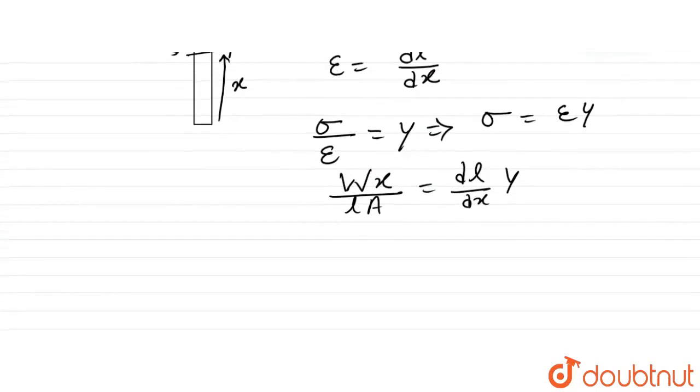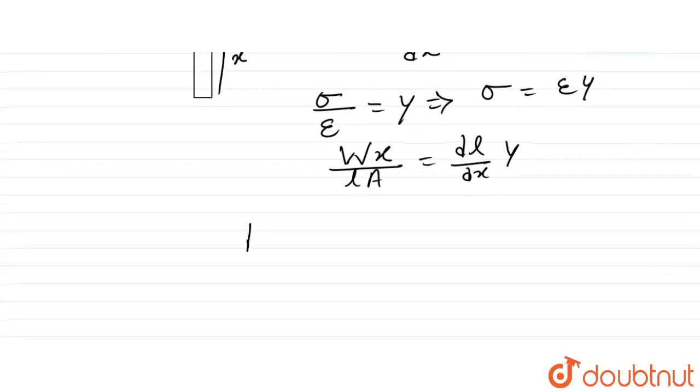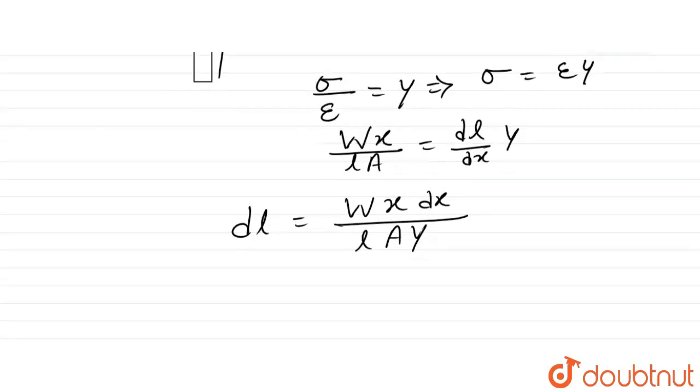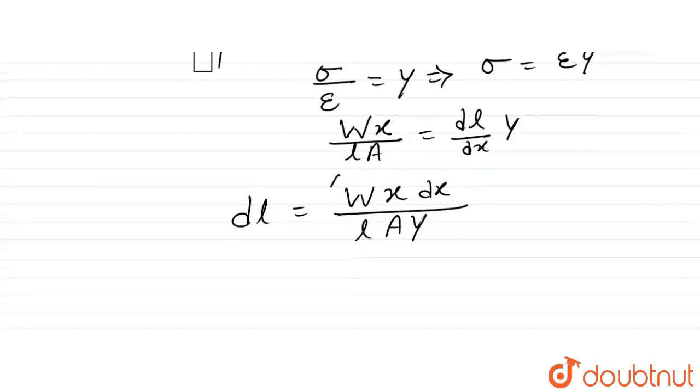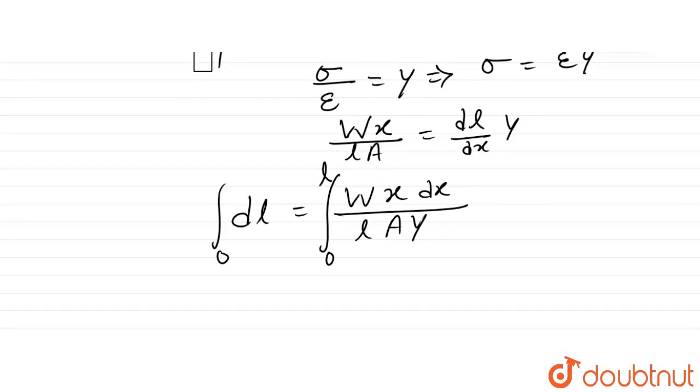To find the total change in length, we integrate: dl equals W×x×dx divided by l×A×Y. Here W, l, A, and Y are constants. We integrate from 0 to the total length l to get the total change in length delta l.